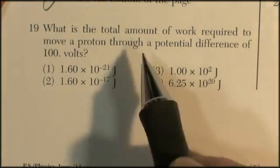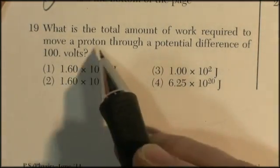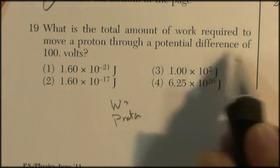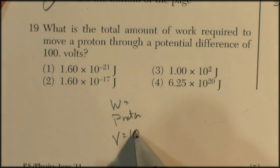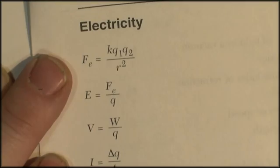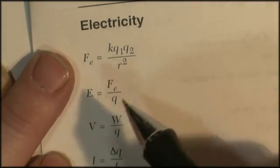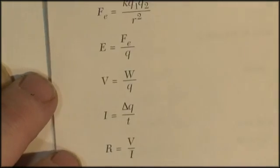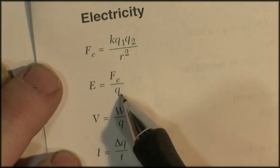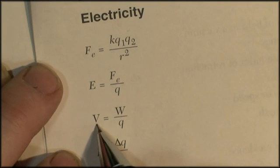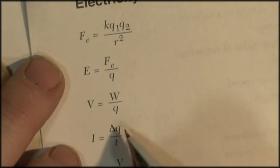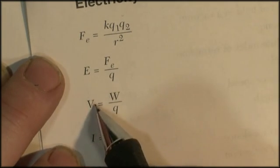Now, question 19. What's the total amount of work required to move a proton through a potential difference of 100 volts? Oh man, I never remember this. Let's find a formula sheet. Well, if we look at the electricity formulas, we find the force between charges, the electric field strength, a force on a charge, oh, and here we go, voltage equals W over Q, W is the work.